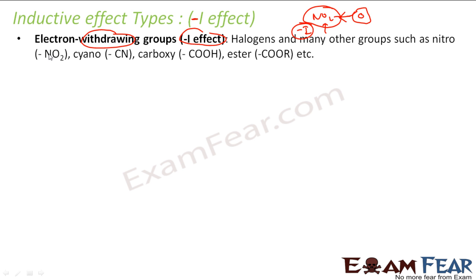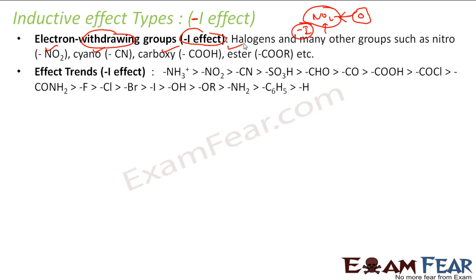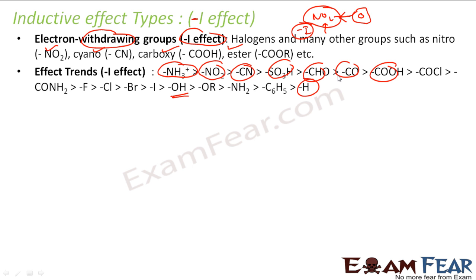Examples of minus I effect groups are: nitro group (NO2), cyano group (CN), carboxyl or ester groups. The trend for minus I effect strength is: N+H3 is strongest, then NO2, then CN, SO3H, CHO, CO, and the list continues. OH also has a minus I effect, COOH also has a minus I effect, and NH2 also has a minus I effect. Remember this chart — it is pretty critical.